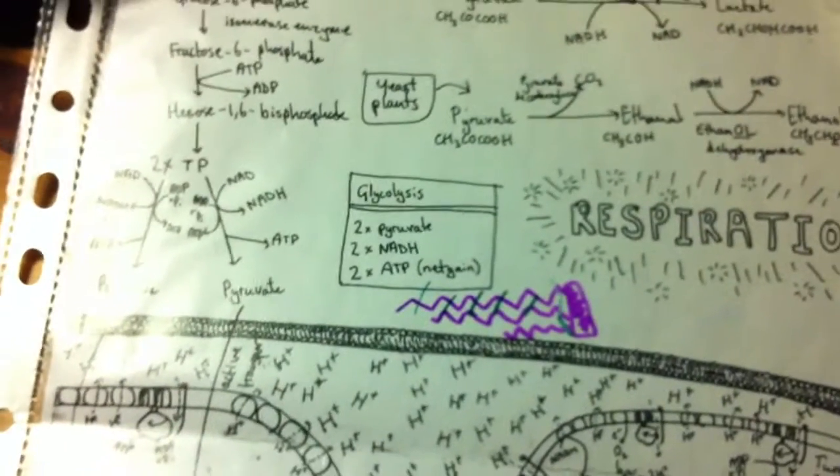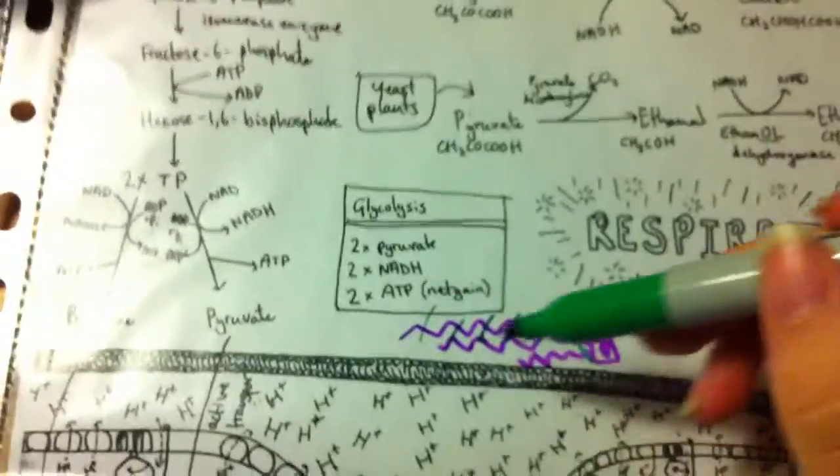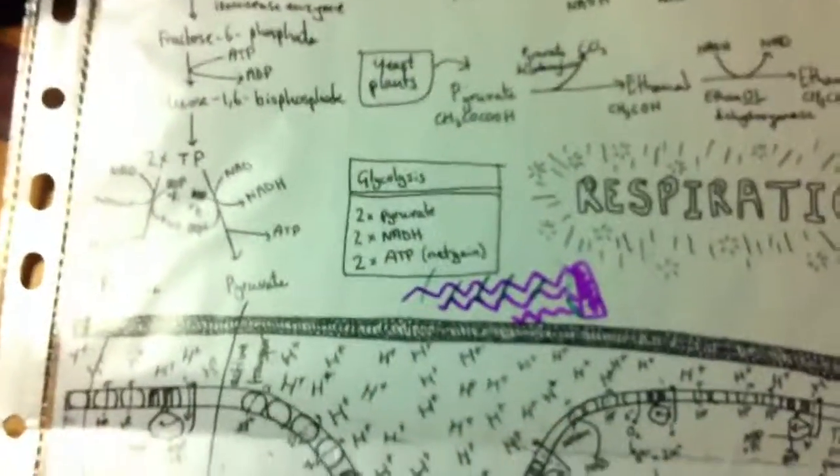So you're going to have to respire your fatty acids and your amino acids. So I've drawn this already. So this is my triglyceride. So here are fatty acid chains, and here's the glycerol molecule. So these ester bonds will be hydrolyzed to form the fatty acids and the glycerol molecule. Now, glycerol can enter the Krebs cycle directly.